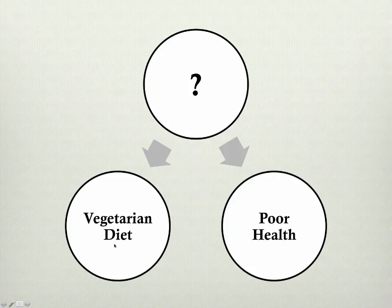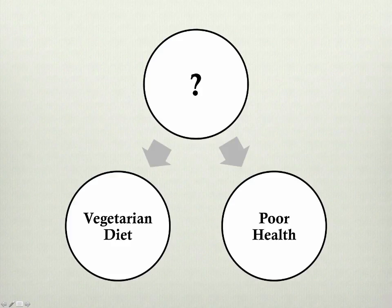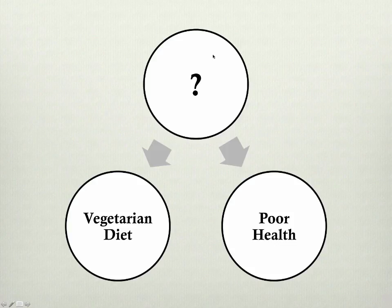So in order to prove that vegetarian diet causes poor health, what would we have to do? The reason we can't say that vegetarian diet causes poor health is largely because we have this potential for a confounding variable. In order to prove that the one thing causes the other, we really would like to rule this out and say there are no confounding variables that are potential influencers of these other variables — so we can draw a direct connection and say vegetarian diet really does cause poor health.